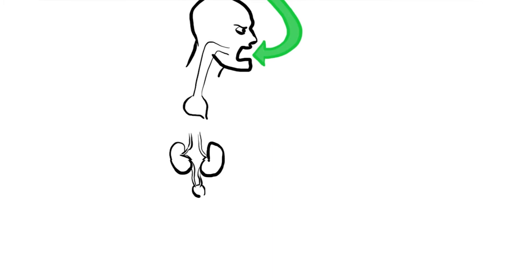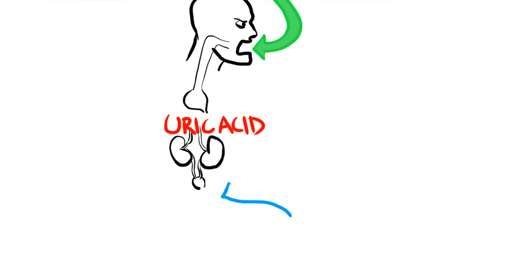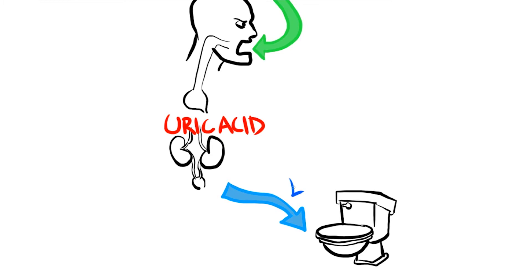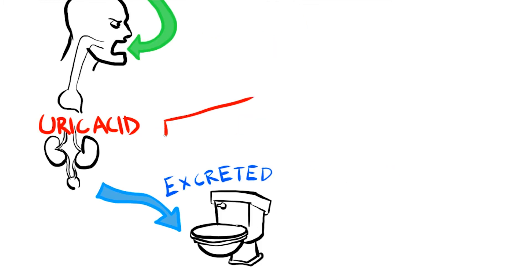The uric acid is filtered out of the blood in the kidneys and then excreted in urine. Unfortunately, some people's bodies are not as good at excreting the uric acid or they produce too much uric acid. This is likely caused by a combination of factors including diet, lifestyle, genetics, medications and other medical problems.